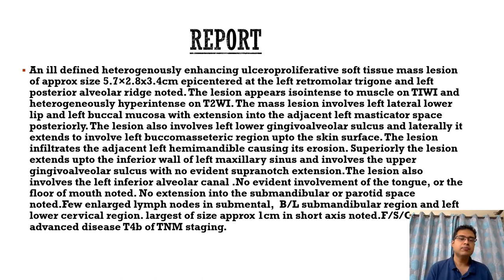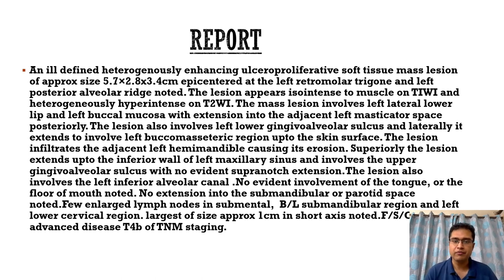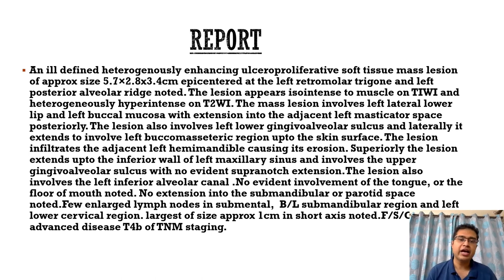This is the report I had given, and every word is extremely important. It defines a heterogeneously enhancing ulceroproliferative soft tissue mass — it is very important to mention the morphology, whether it is plaque-like or ulceroproliferative. Size is approximately 5.7 × 2.8 × 3.4 cm. It is very important to mention the size as well as the DOI — depth of invasion — and to state that the mass is epicentered in the left retromolar trigone and left posterior alveolar ridge. The lesion appears isointense to muscle on T1, heterogeneously hyperintense on T2, and involves the left lower lip and left buccal mucosa with extension into the left masticator space posteriorly.